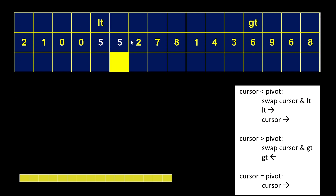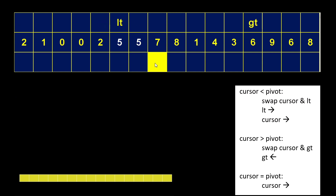Just like that, our two pivots are now together, and they're going to stay together. So the cursor is now at a pivot — this is equal to the pivot — that brings us to rule number three, and rule three says all you do is move the cursor to the right. Now we're at a number smaller than the pivot, so we swap cursor and LT, move LT to the right, move the cursor to the right. Now we're greater than the pivot, so swap the cursor and GT, move GT to the left. We're still greater than the pivot, so swap the cursor and GT, move GT to the left.